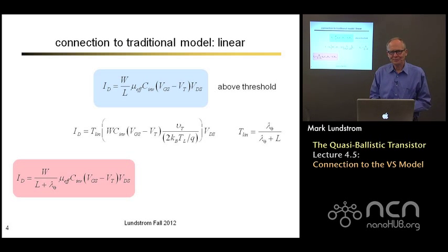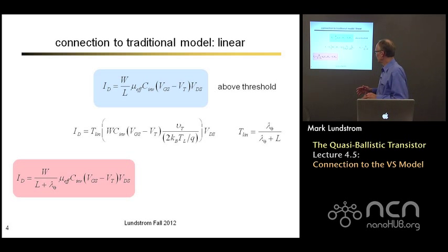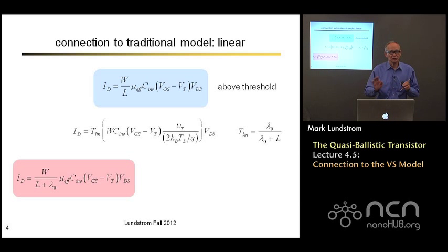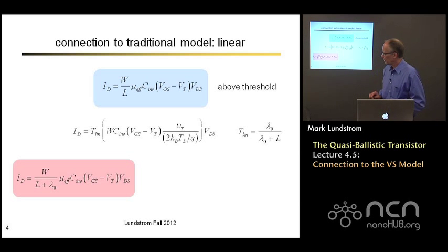In the ballistic limit, you might ask what the mean free path is doing in our expression. Remember, the effective mobility has a mean free path in it, so those two just cancel out and we get the proper expression for the ballistic current. There's another way I could write this: mobility is related to mean free path, so I could do the algebra and express the same equation in a different way.